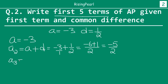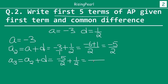Now the third term will be our second term plus d. So the second term is minus 5/2 plus 1/2. So 2 is our denominator and we will get minus 5 plus 1, which will be minus 4/2. We can leave it like this or write it as minus 2. I am going to keep it as minus 4/2 — you will see why.